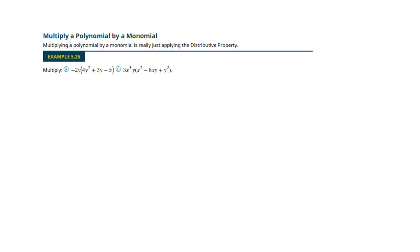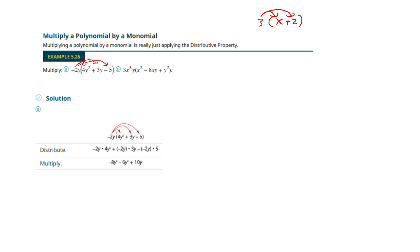Now we're going to multiply a polynomial by a monomial. It's the same idea as distribution — whatever's being multiplied is going to get distributed. But it's a polynomial now, so he's going to go to each term. Basically we're going to do three of the same type of problem we just did. So they've multiplied it all out: the first problem is negative 2y times 4y to the second, here's the second problem, and here's the third. We have three problems just like before.